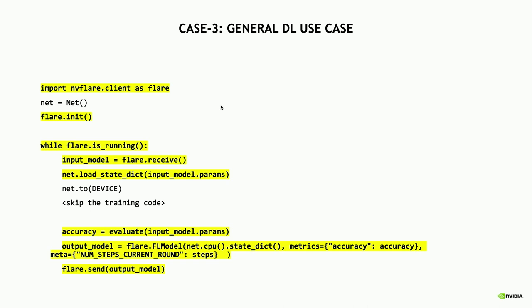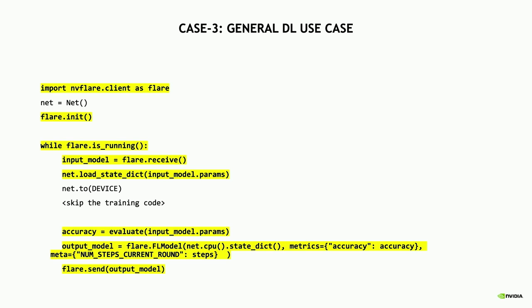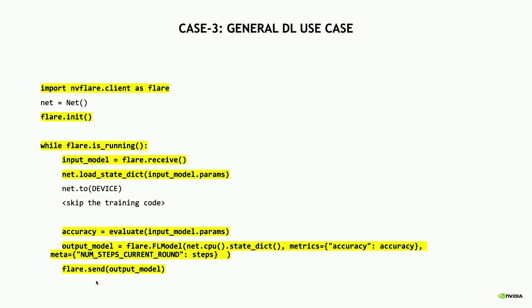For the general DL use case — if you're not using Lightning and not structuring your code in specific functions — you can write flat or simple code as you want. Just declare your model, import the client API, initialize it, and wrap in a while loop if your data setup takes a long time. Then you receive the global model parameters, load them into your model, do normal training, compose the object with your trained model weights, and send it back to the server.